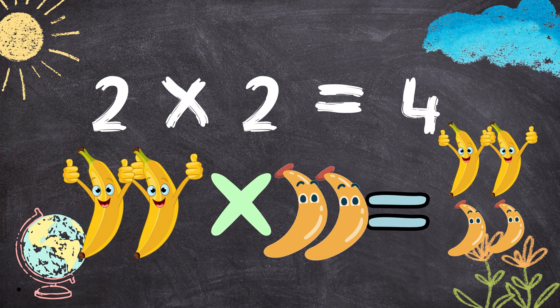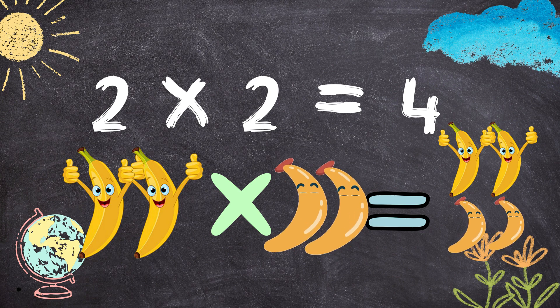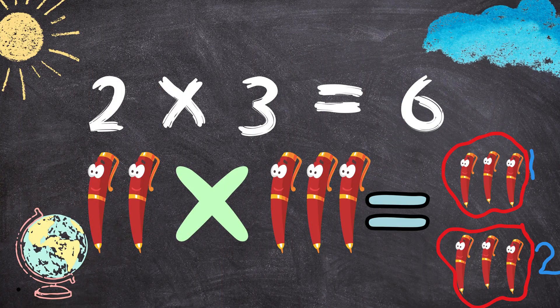Two multiplied by two equals four. Two bananas times two bananas will give you four bananas. Two times three equals six. Two pens multiplied by three pens will give you six pens.